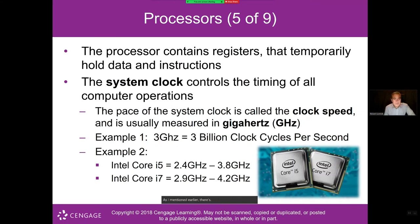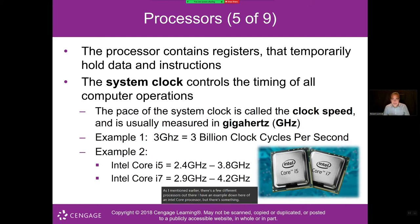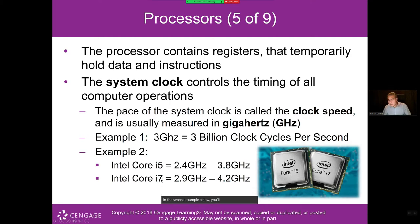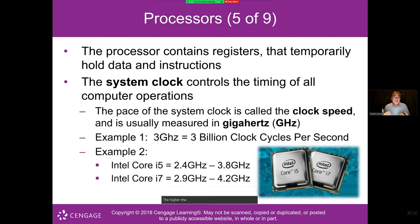There's also something called the clock cycle, which controls the timing of all computer operations. The higher the gigahertz, the faster the clock speed. A 3 GHz processor calculates three billion clock cycles per second. For example, the Intel Core i7 can range up to 4.2 GHz, meaning 4.2 billion clock cycles per second.